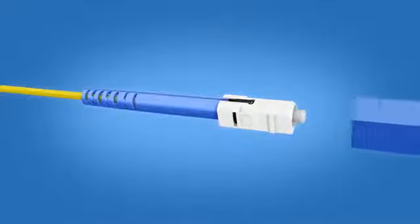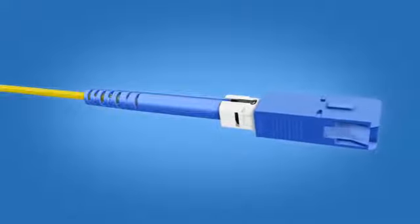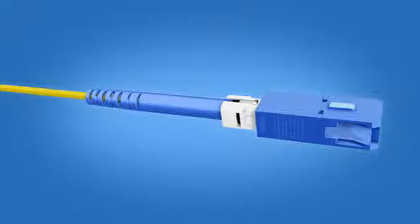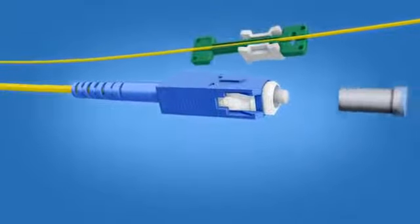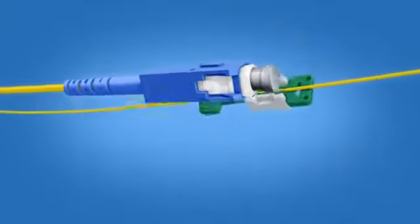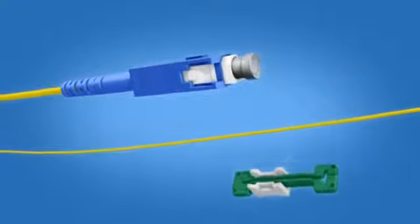Slide the connector housing onto the connector body. The key on the housing and the key on the boot should align. Push until a click is heard. Apply the dust cap and remove the cable clamp. The termination is now complete.